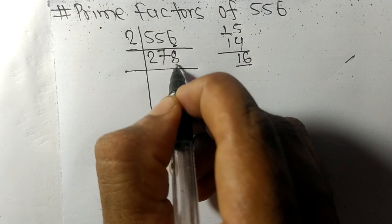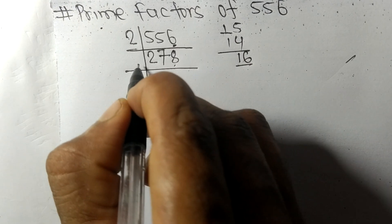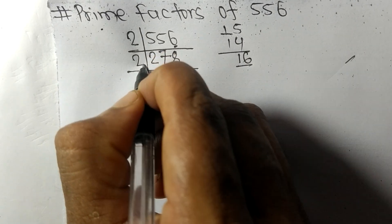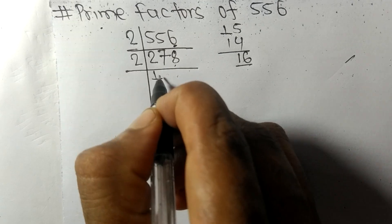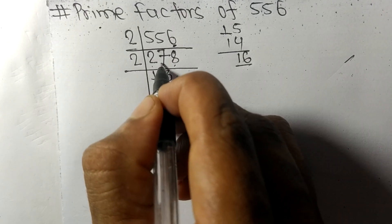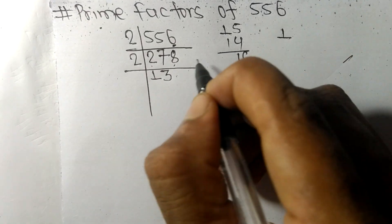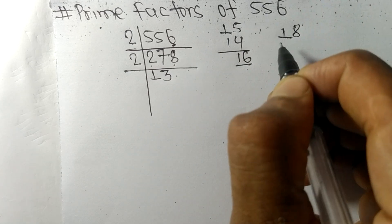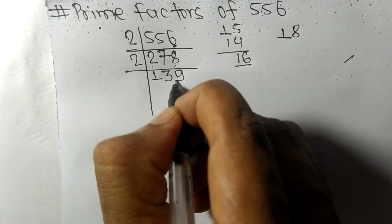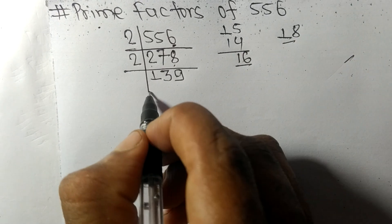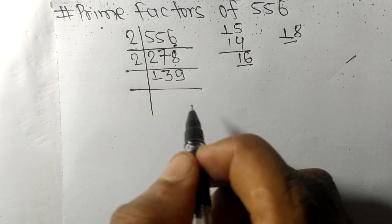2 times 1 is 2. 2 times 3 is 6, remainder 1, and this 8, 18. 2 times 9 is 18. So now we got here 139, which is our prime number.